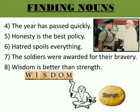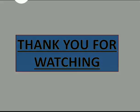The last sentence: 'Wisdom is better than strength' — wisdom and strength are the nouns, and both are abstract nouns. I hope you have all understood the different types of nouns. If you have any problem with it, you can write down in the comment box. Please like, share and subscribe the video. Thank you so much for watching.